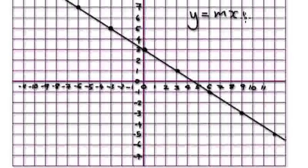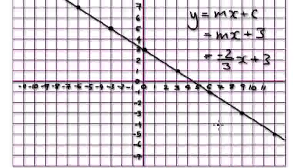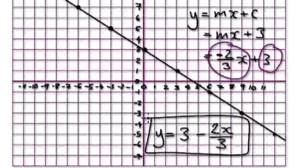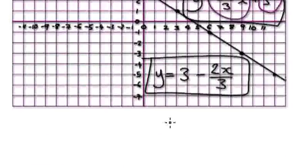Start with y equals mx plus c. You know c is plus 3. The gradient is minus 2 over 3. And then you've got your x plus 3. Now, you've got a minus number plus a positive number, so switch these two around. It would be neater — so it becomes y equals 3 minus 2x over 3. This answer looks a lot better because you don't have a minus in front. Now turn this into a fraction: 3 over 1 minus 2x over 3. Times top and bottom of the 3 by 3, giving 9 over 3 minus 2x over 3.